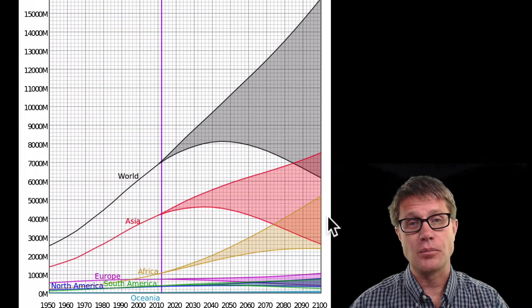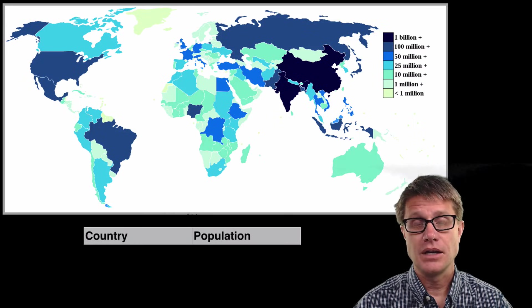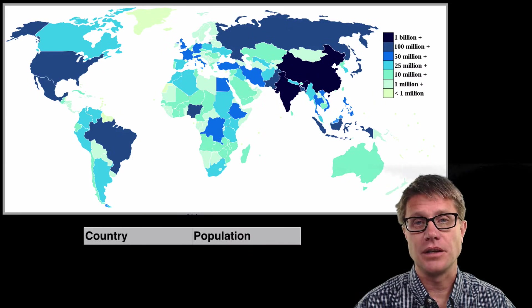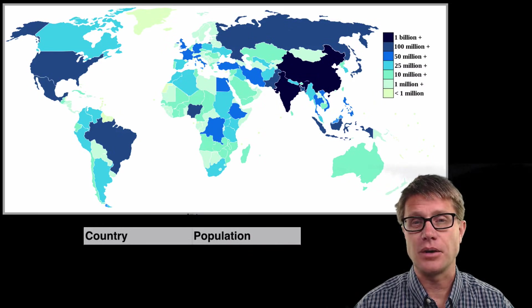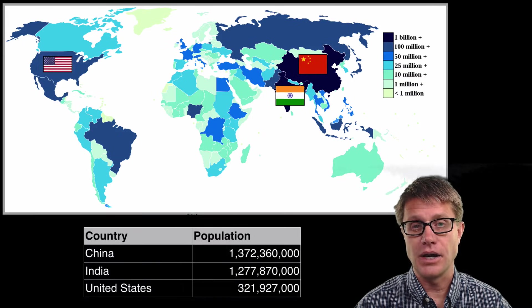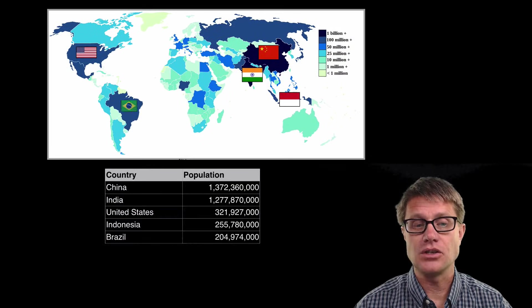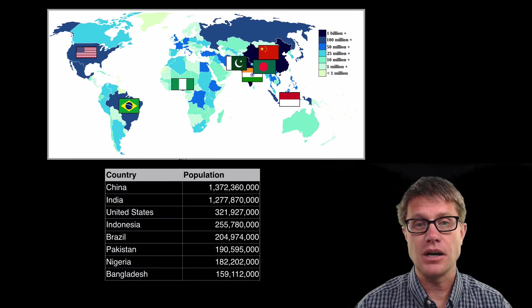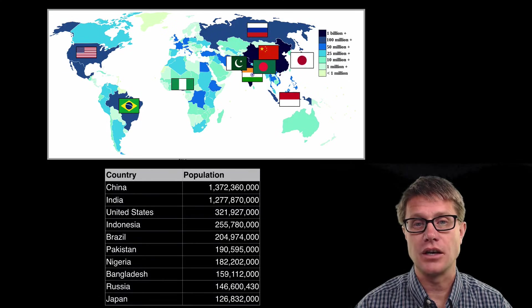But we have got these regions that are broken down into countries. Now in AP environmental you should know the top 10, as far as population goes, countries on the planet. You probably could guess a few of those. It is going to be China, India, then the US. And then we go to Indonesia, Brazil, we have got Pakistan, Nigeria, this would be Bangladesh, Russia and then Japan.